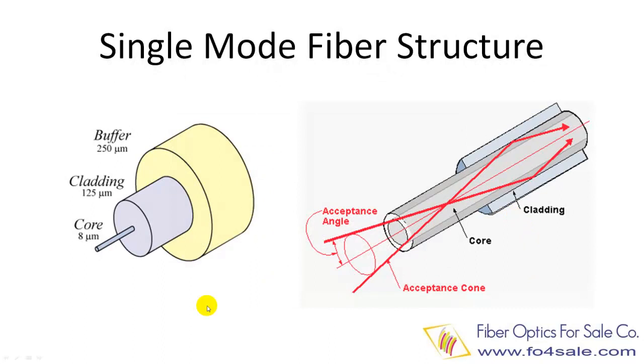Before going further, you should know the typical structure of a single mode fiber. The left illustration shows that single mode fiber has a core with a diameter of 8 micrometers, a cladding with a diameter of 125 microns, and a buffer with a diameter of 250 microns.